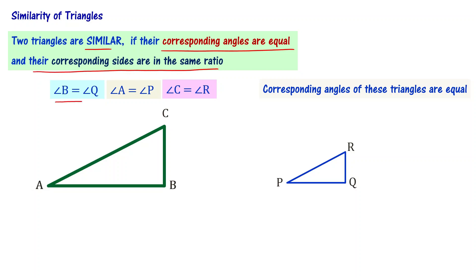Angle B is equal to angle Q, angle A is equal to angle P, and angle C is equal to angle R. The corresponding angles of triangle ABC and triangle PQR are equal.